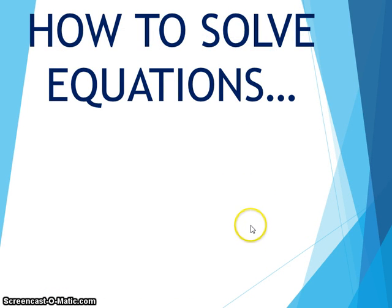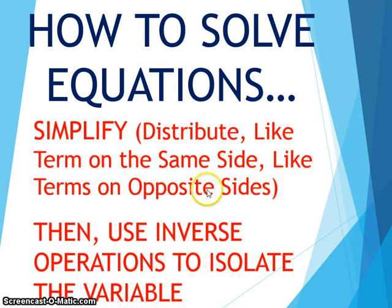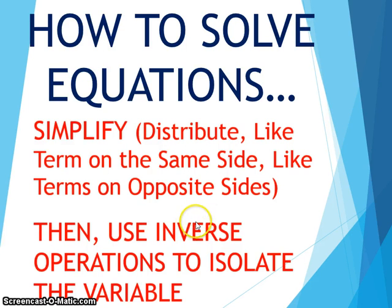To review: in our last lesson we talked about how we solve equations by first simplifying, which means distribute if we have any, then combine like terms on the same side if we have any. Today we're going to add 'eliminate like terms on opposite sides.' After we have simplified these three situations, we can use inverse operations to isolate the variable and create your do-and-undo chart. You cannot create your do-and-undo chart until the simplification has been completed.